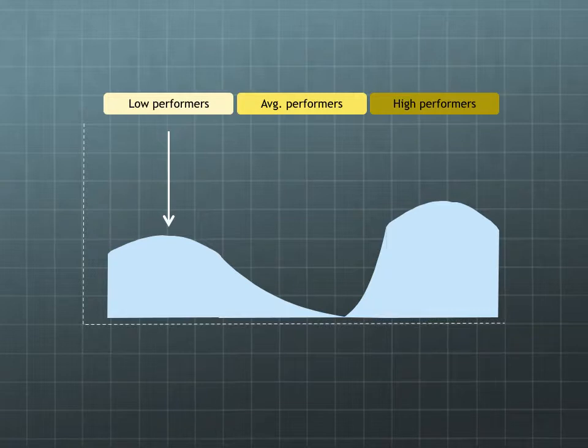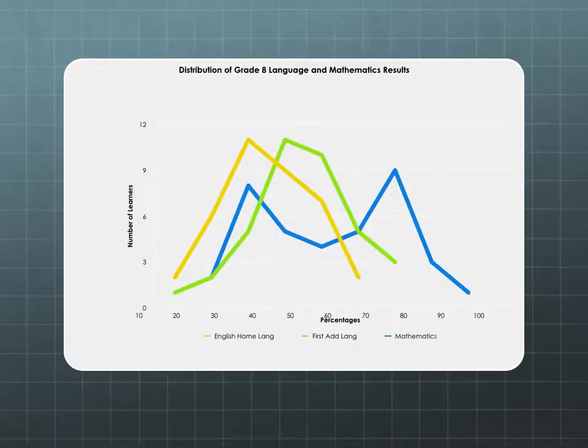Another effective way of using this bell curve is to actually assess the problems of certain classroom assessments and practices by plotting the same group of learners' different subjects one on top of each other. Where the curves differ from each other, there could be problems, especially when they differ vastly.